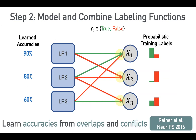This process doesn't require any ground truth data. From developing your labeling functions to this step, you've not had to hand label any data — and that's the key of this Snorkel pipeline. The algorithms here, which we've worked on for a couple of years at Stanford, essentially look at the overlaps and conflicts between different labeling functions and use that to learn how accurate each rule is.